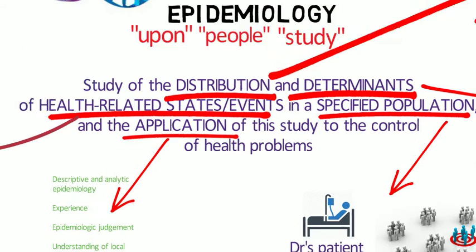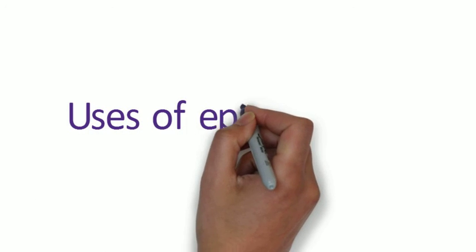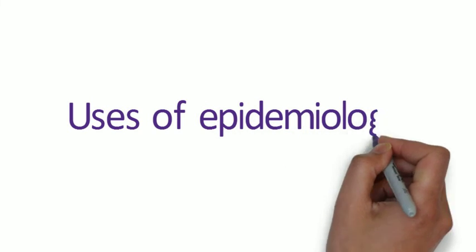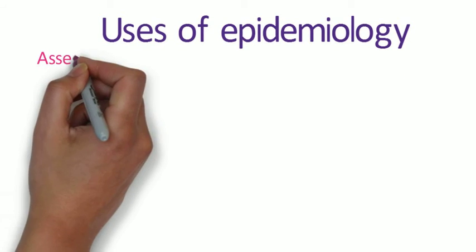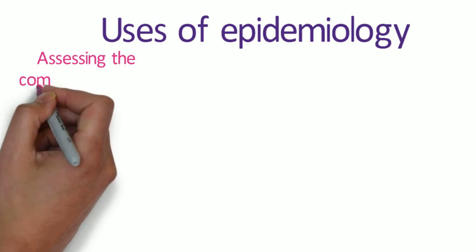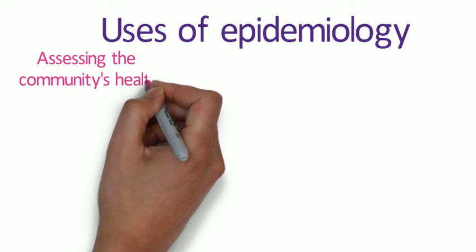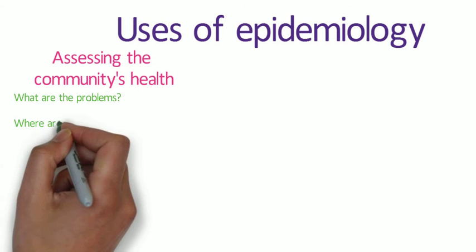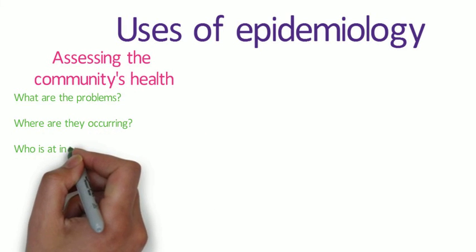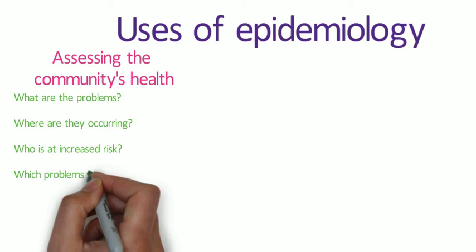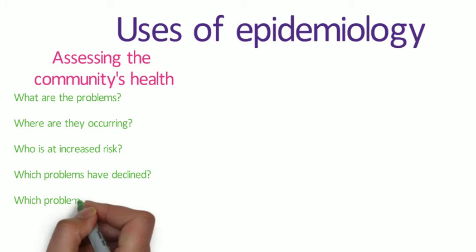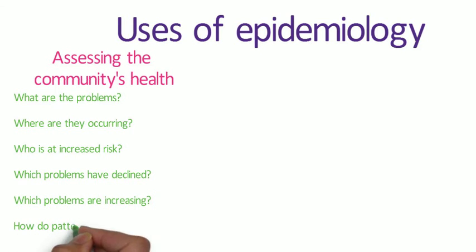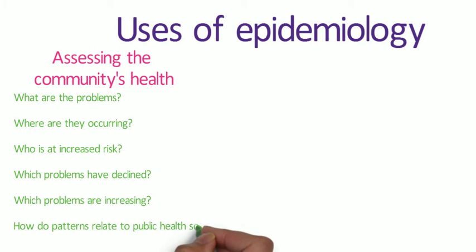Epidemiology and the information generated by epidemiological methods have been used in many ways. For example, they can be used to assess the community's health. Public health officials responsible for policy development, implementation, and evaluation use epidemiological information as a factual framework for decision-making. To assess the health of a population or community, relevant sources of data must be identified and analyzed by person, place, and time. They may have questions such as: What are the actual and potential health problems in the community? Where are they occurring? Which populations are at increased risk? Which problems have declined over time? Which ones are increasing or have the potential to increase? How do these patterns relate to the level and distribution of public health services available?